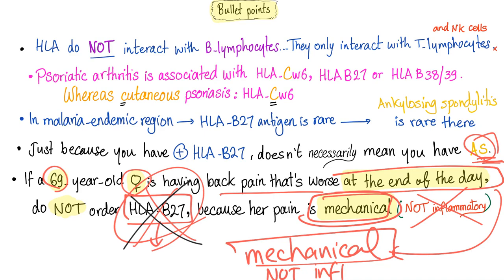7% of Caucasians have positive HLA-B27 and it means absolutely nothing without clinical context. Remember in rheumatology — does the lab result correlate with the clinical picture? The lab result must correlate with the clinical picture.